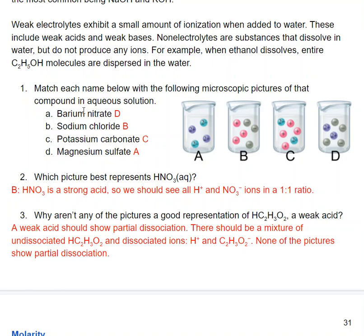Which picture would best represent nitric acid? That's going to be picture B. Nitric acid is a strong acid. So we would see all H+ and NO3- ions in a one to one ratio, which is what B is showing. It's showing the cations in a one to one ratio with the anions.